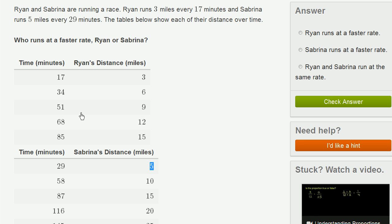The easiest ones to compare are when you have the same numerator or the same denominator. Let's see—are there any points at which the numerators are the same or the denominators are the same? It looks like it took Ryan 85 minutes to go 15 miles, and it took Sabrina 87 minutes to go 15 miles.